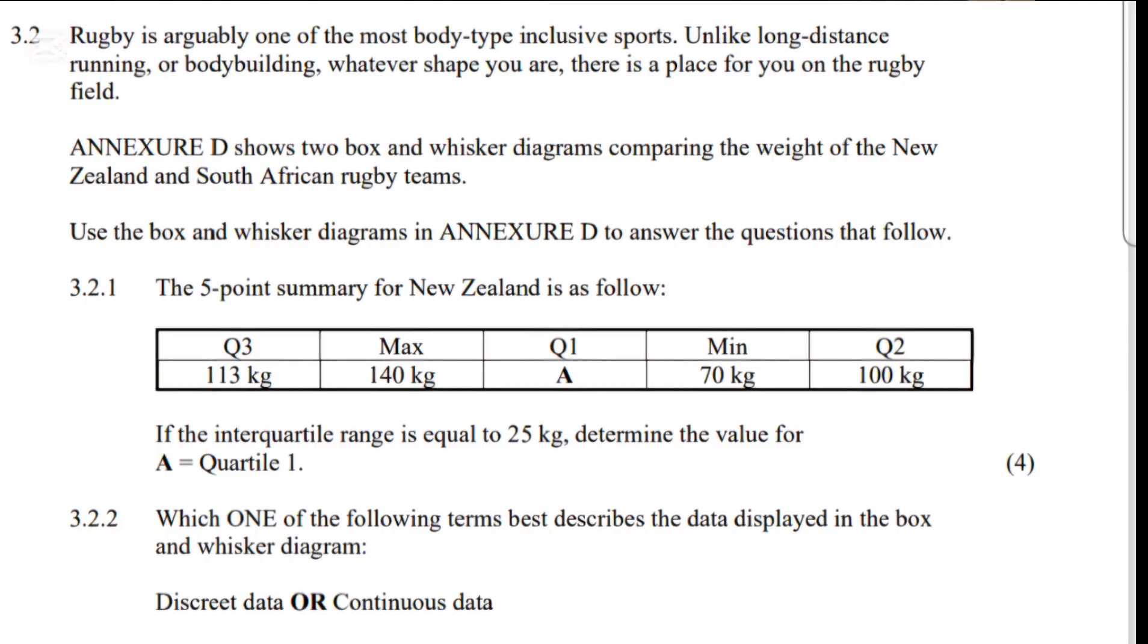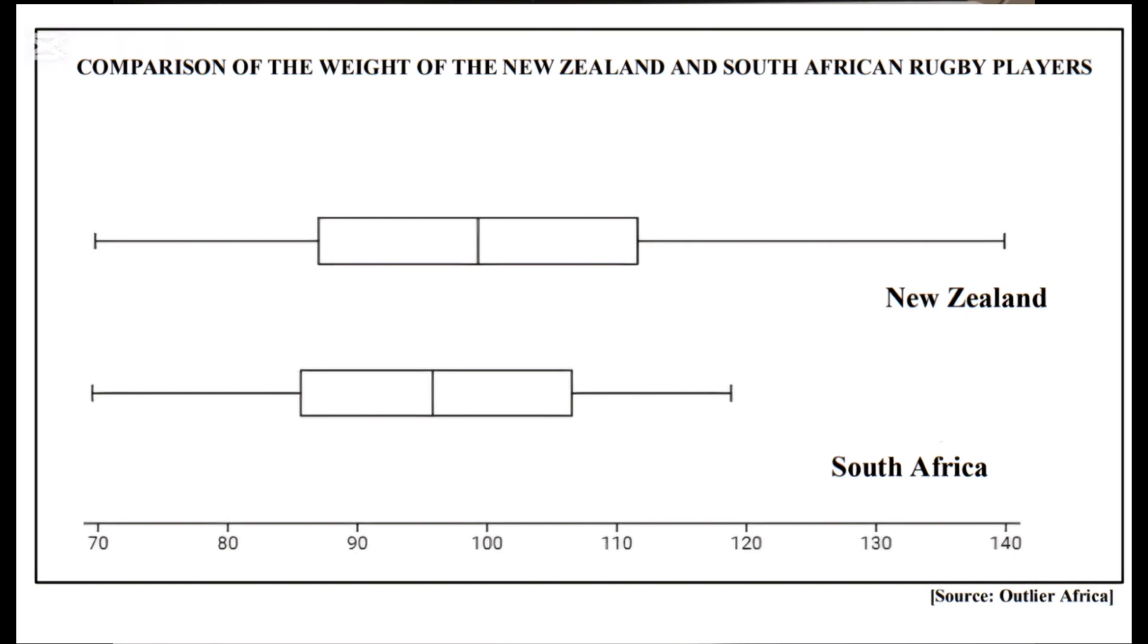Use the box and whisker diagram in Annexure D to answer the questions that follow. Let's go to Annexure D and see what is given. If you look here, we are given two box and whisker diagrams. The one at the top is for New Zealand, whereby the minimum is around 70 and the maximum is around 140, and then we know the Q1, Q2, and Q3.